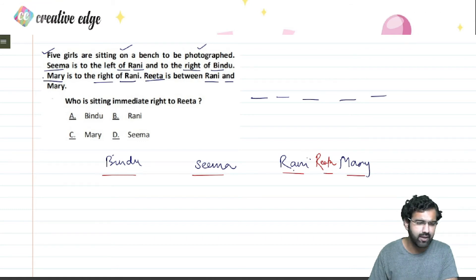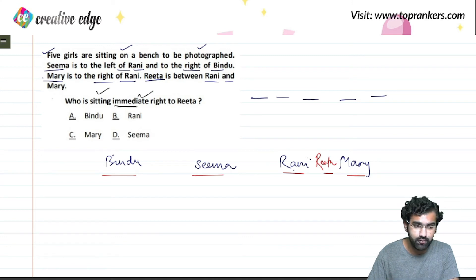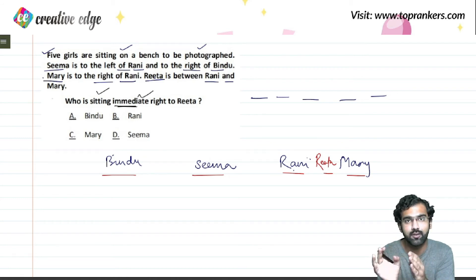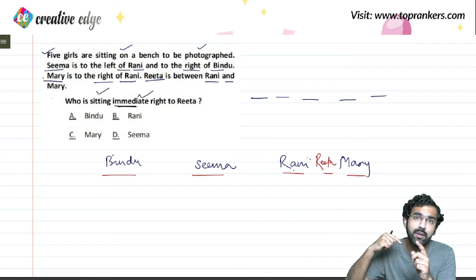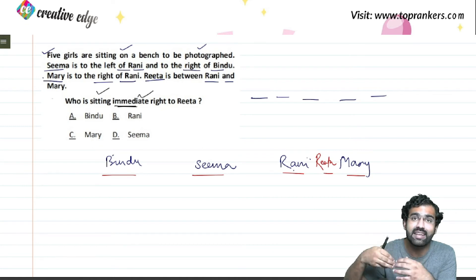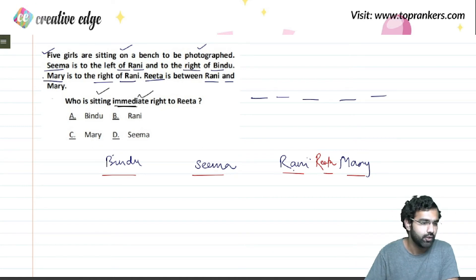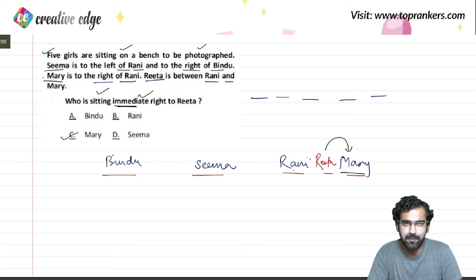Now, what are we asked? The question asks who is sitting immediate right. There is a difference between 'right' and 'immediate right.' 'Right' means anywhere on the right-hand side, whereas 'immediate right' means exactly the next position to the right. So the immediate right of Rita is Mary, and the answer is option C.